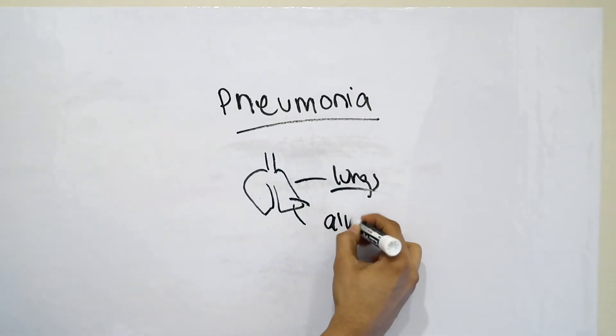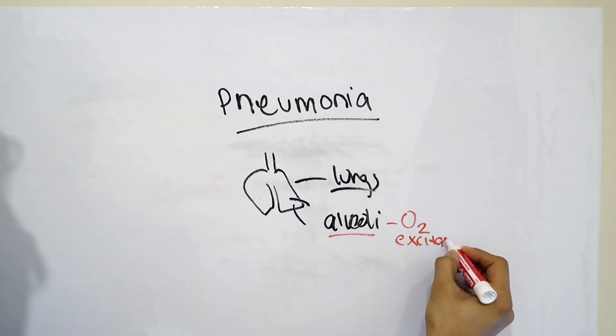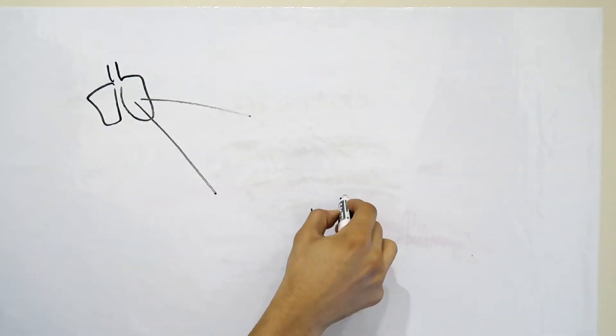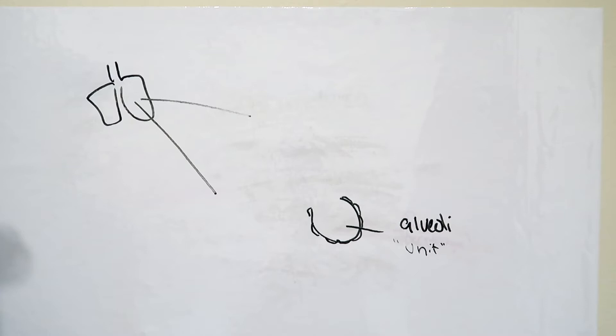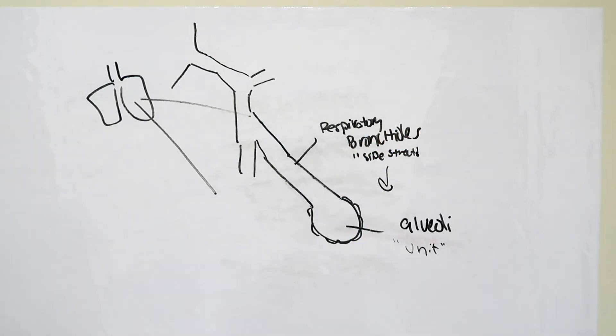The lungs contain tiny little alveoli, which are super important for oxygen exchange. So in order to really understand pneumonia, let's talk about these alveoli for a second. The alveoli are kind of like little units or oxygen exchange factories. But in order for oxygen-rich air to make its way down to these units, we have respiratory bronchioles, which are kind of like the side streets, transporting oxygen with air.